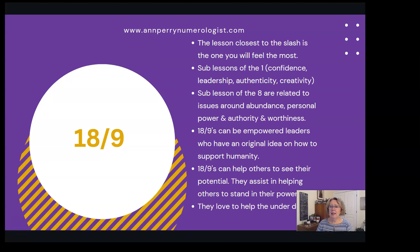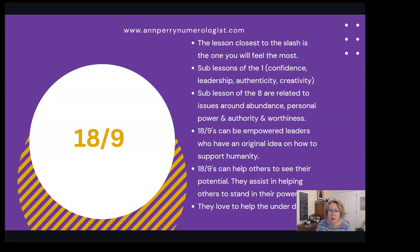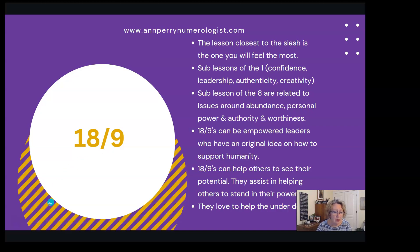For the 18/9, the lesson closest to the slash is the one you'll feel most — so the eight sub-lesson is felt more than the one, though you must overcome both. The sub-lesson of the one involves developing more confidence, leadership potential, authenticity, creativity, and originality. The sub-lesson of the eight relates to issues around abundance, personal power, authority, worthiness, and money. 18/9s can be empowered leaders with original ideas on how to support humanity, helping others stand in their own personal power and championing the underdog.